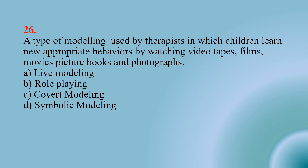Number twenty-six: A type of modeling used by therapists in which children learn new appropriate behaviors by watching videotapes, films, movies, picture books, and photographs — Option A: live modeling; Option B: role playing; Option C: covert modeling; Option D: symbolic modeling. The right option is D — symbolic modeling.